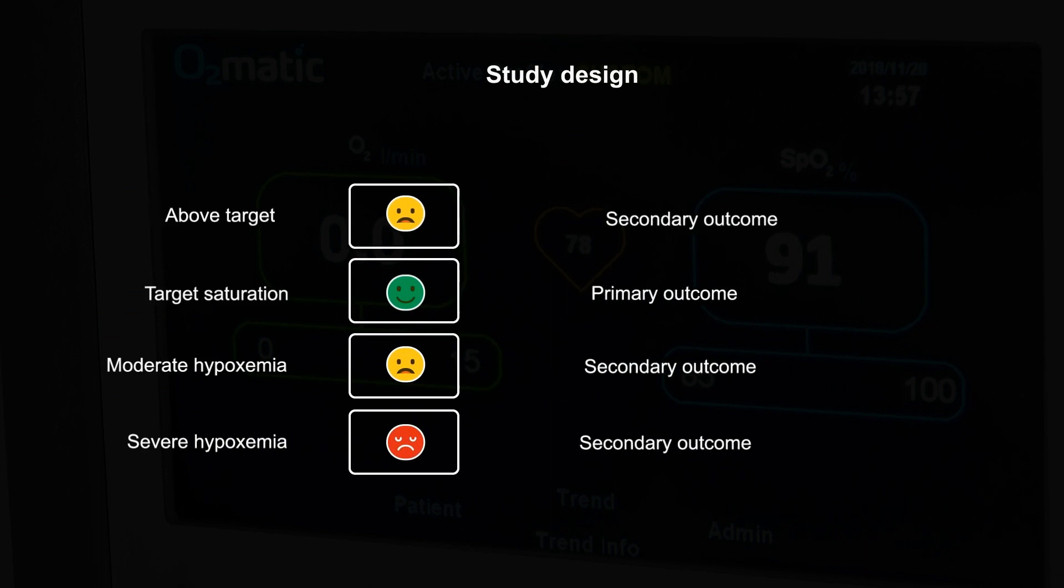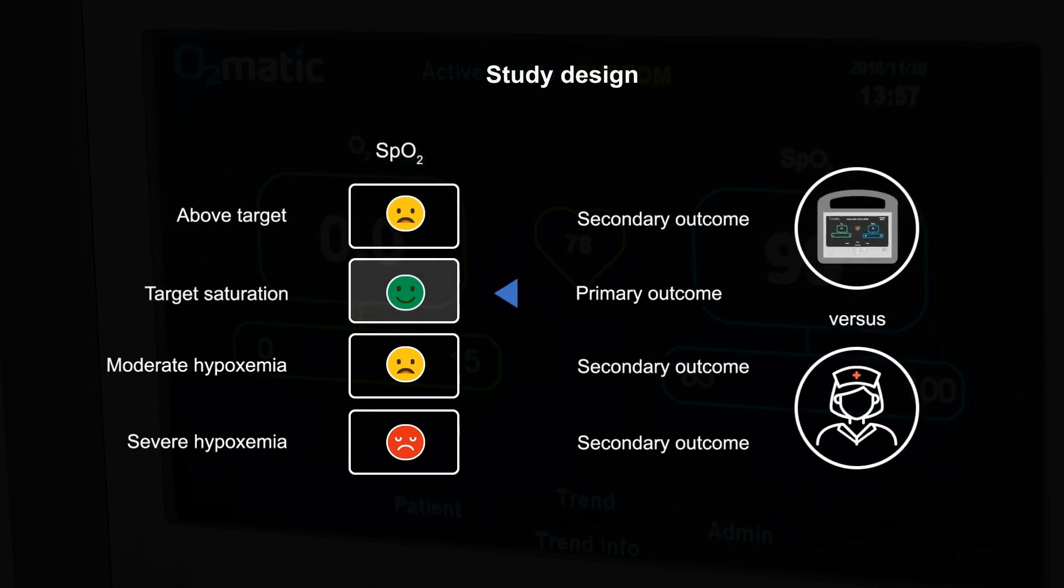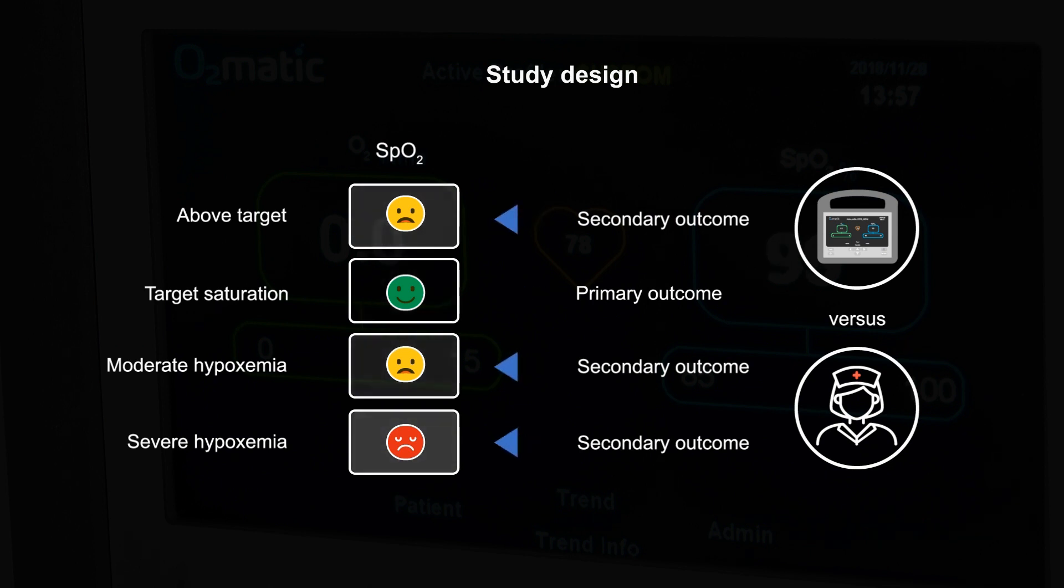The primary outcome of this study was time within target saturation interval with O-matic and with manual control. Secondary outcomes were time with severe and moderate hypoxemia and time with saturation above target.